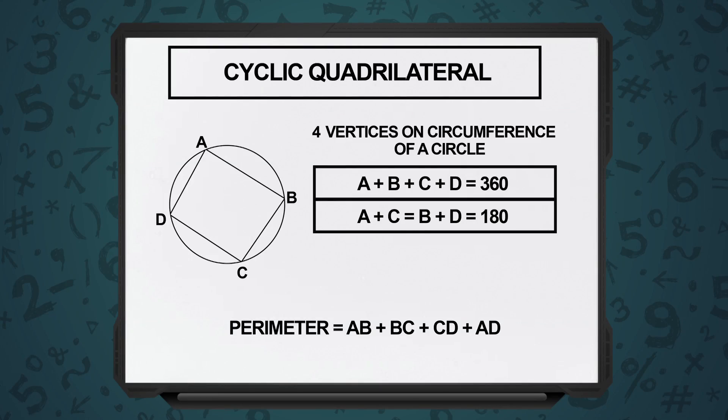Hence, this quadrilateral is known as a cyclic quadrilateral. It has one very unique property, the sum of two opposite angles, which means the angles across the diagonals. The sum of two opposite angles is always equal to 180 degrees.